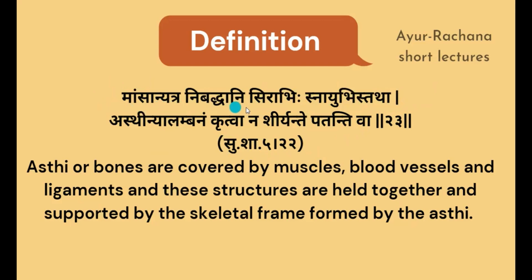Sira abhi is naya vistada — the nerves, vessels, and vasculature which are covering the asti. For example, if you take the arm, we have muscles covering the asti which is the humerus, and many vessels running over it. So all this can be taken as the outer covering of the asti — structures covering it externally.